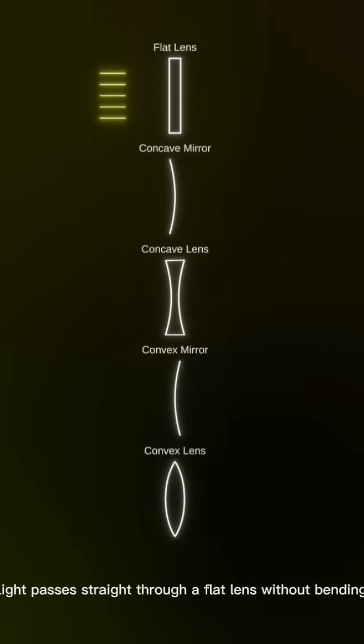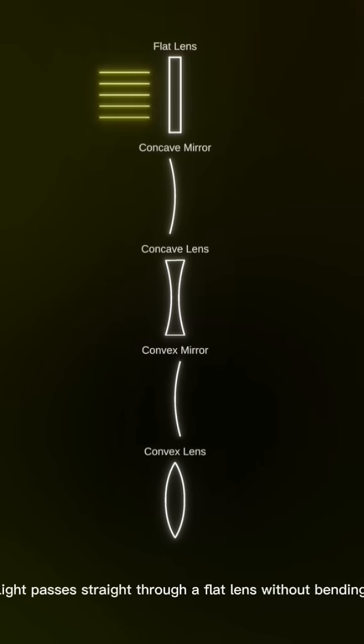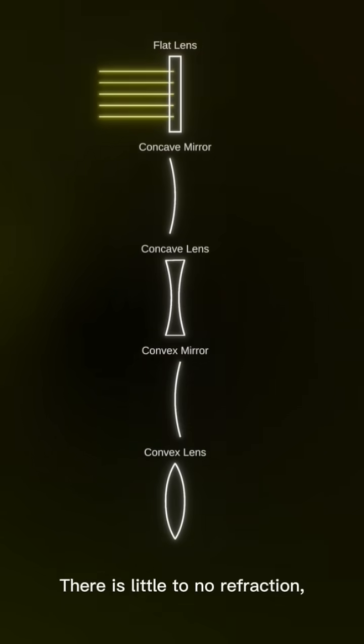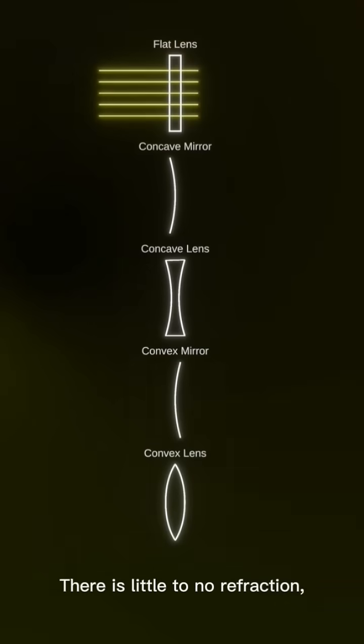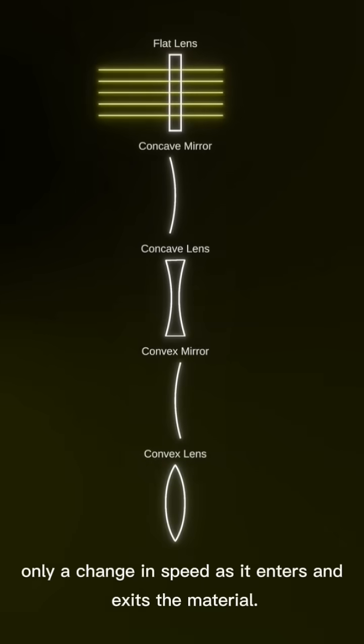Flat Lens. Light passes straight through a flat lens without bending. There is little to no refraction, only a change in speed as it enters and exits the material.